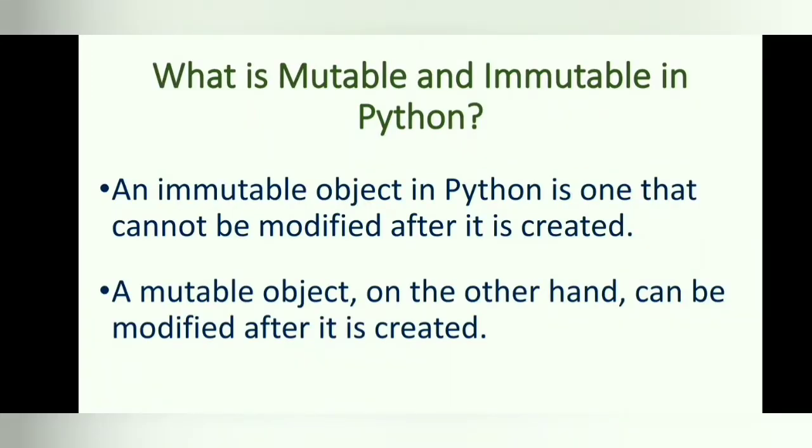What is mutable and immutable in Python? An immutable object in Python is one that cannot be modified after it is created. A mutable object, on the other hand, can be modified after it is created.